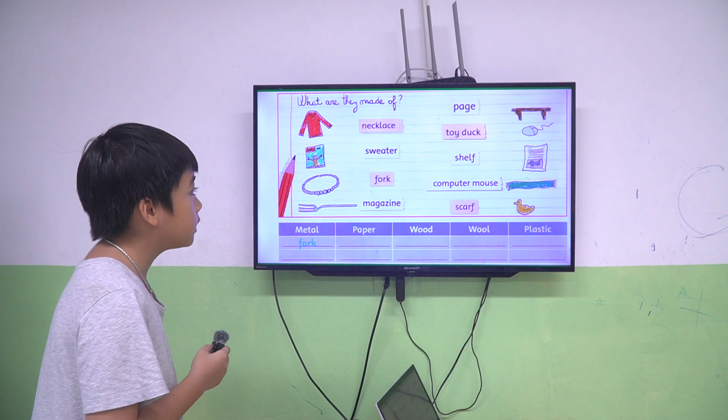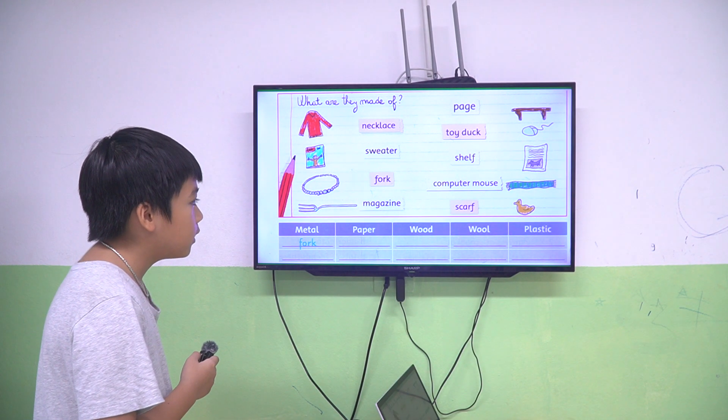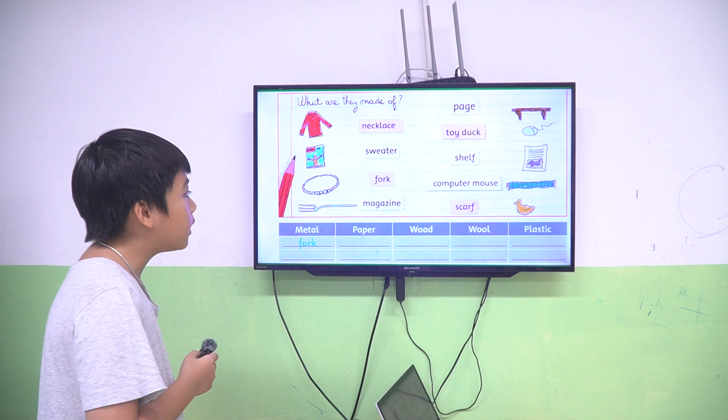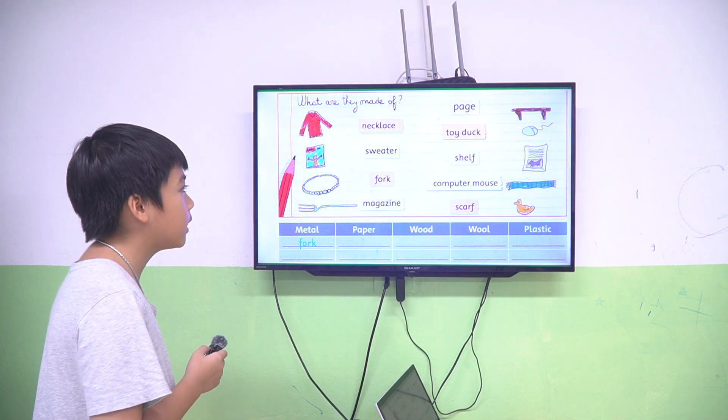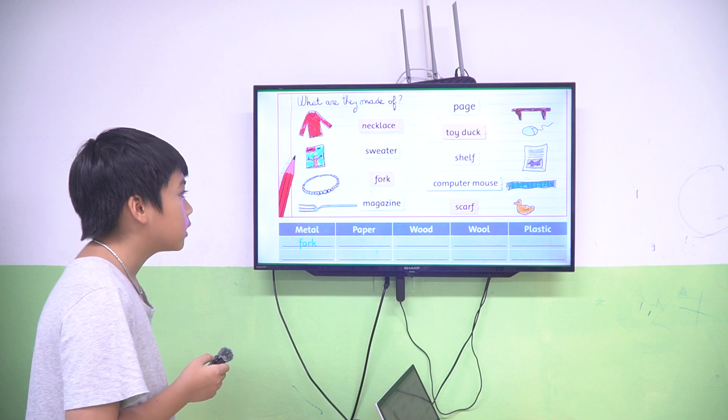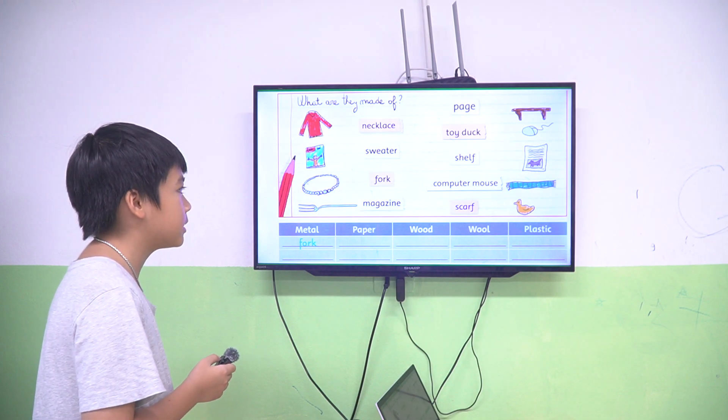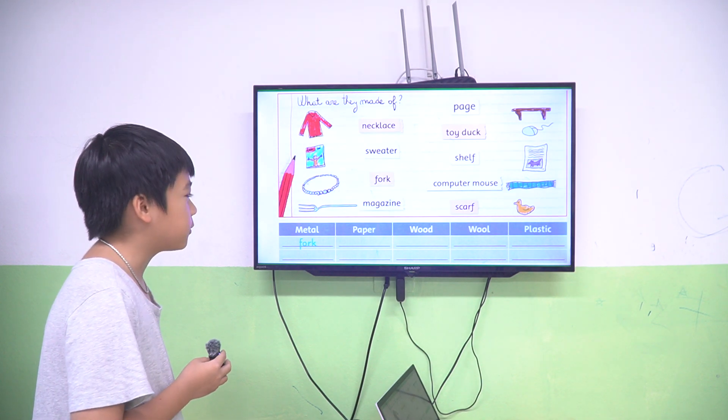The toy duck is made of plastic. The shelf is made of wood. The computer mouse is made of plastic. The scarf is made of wool.